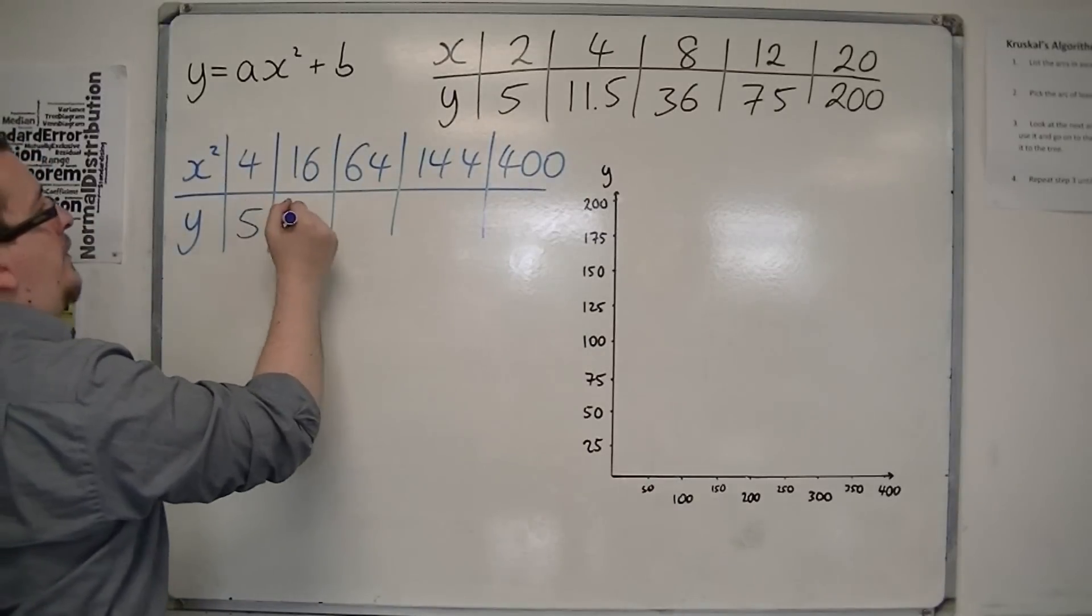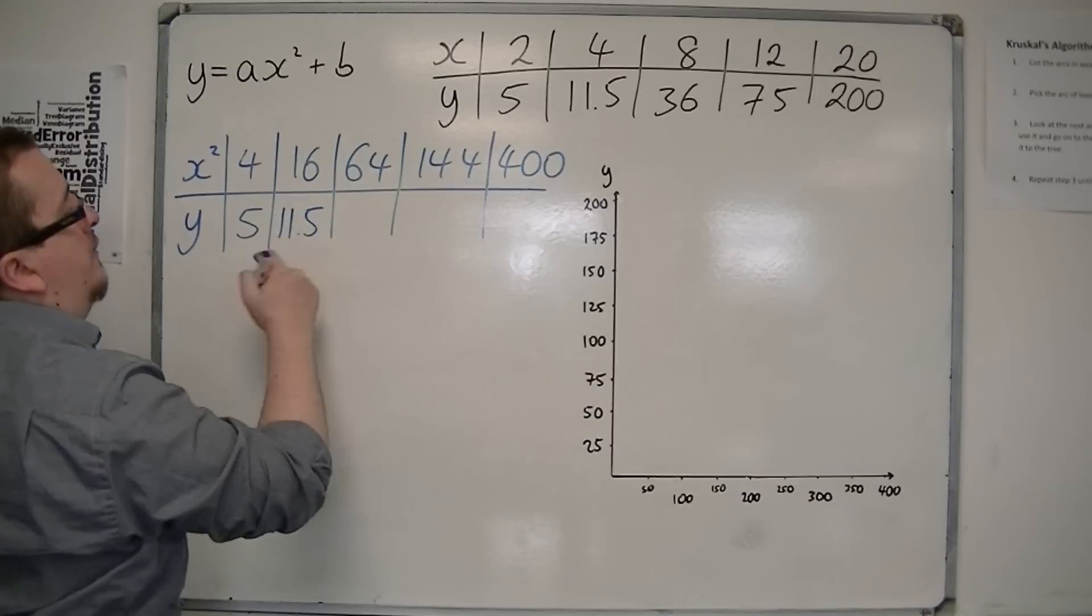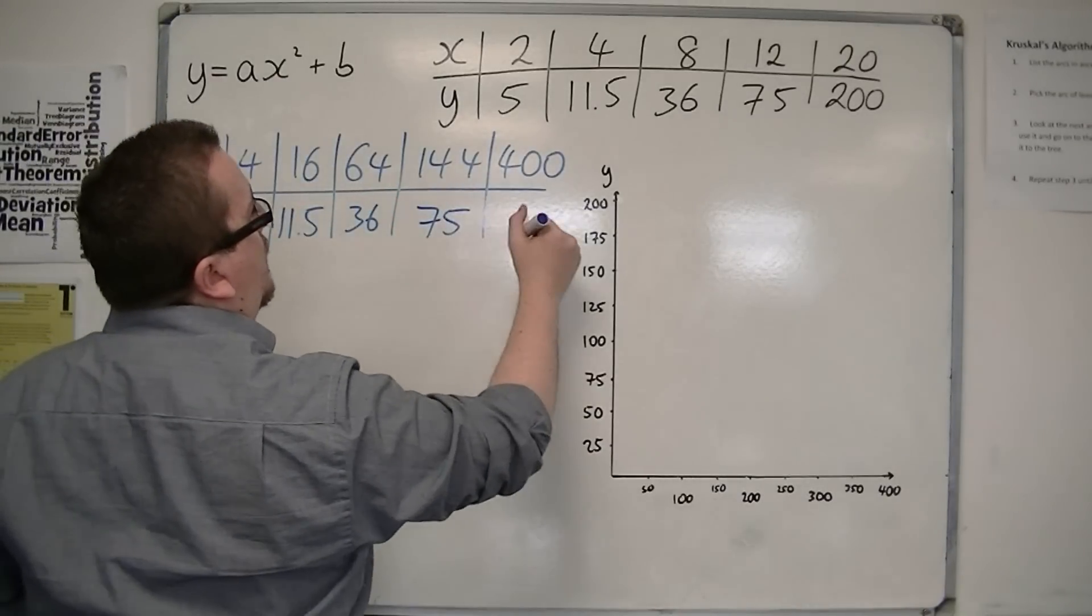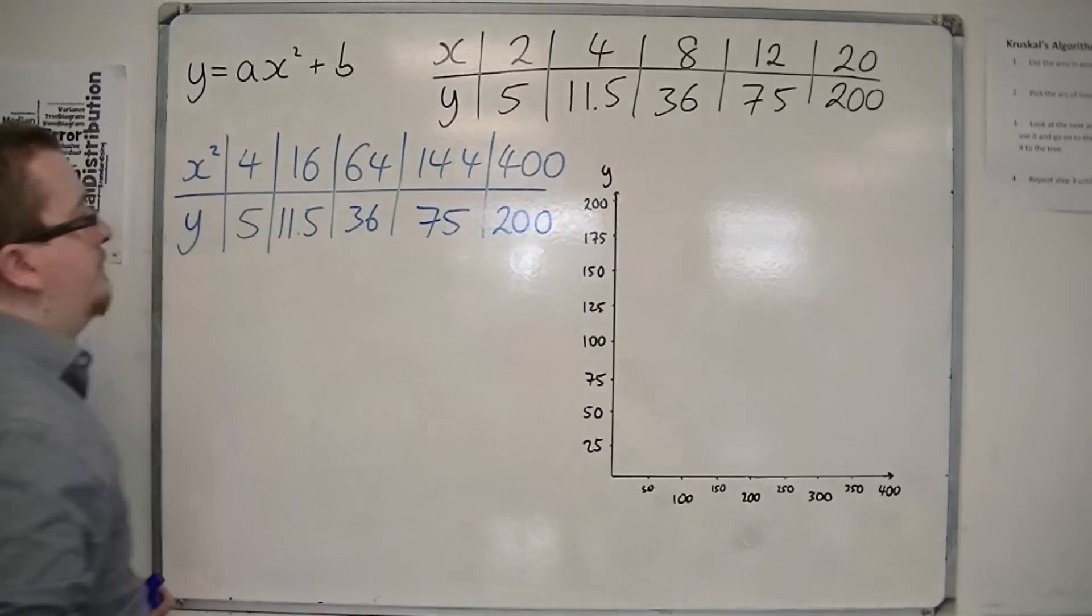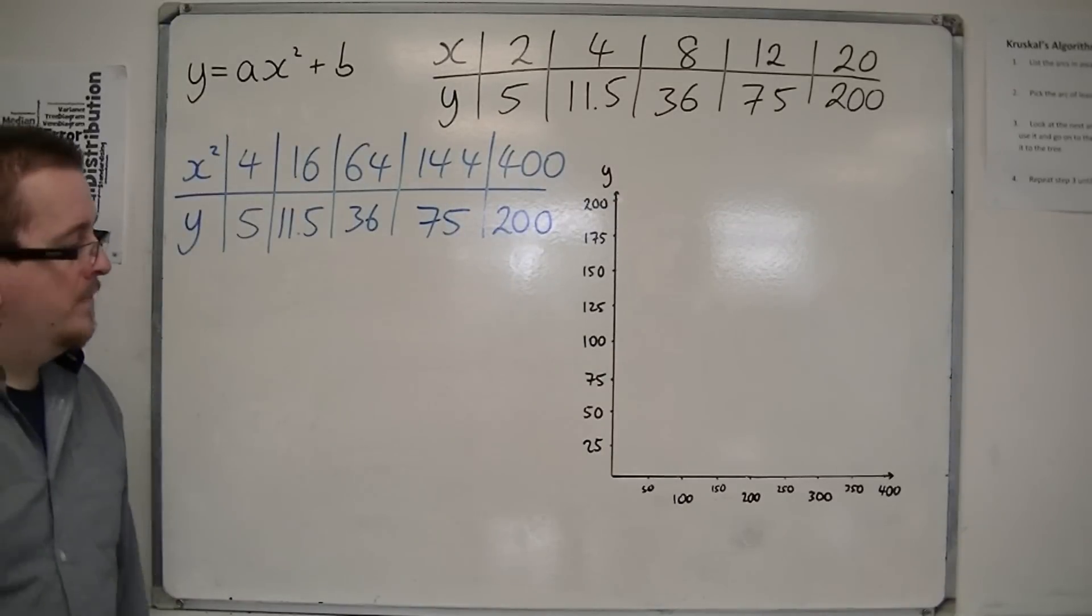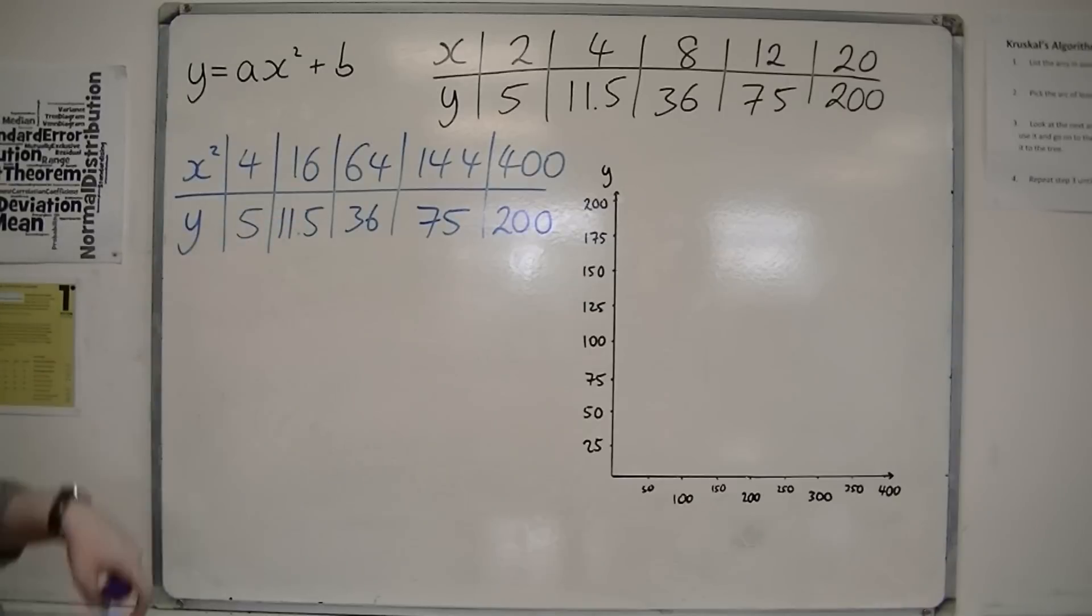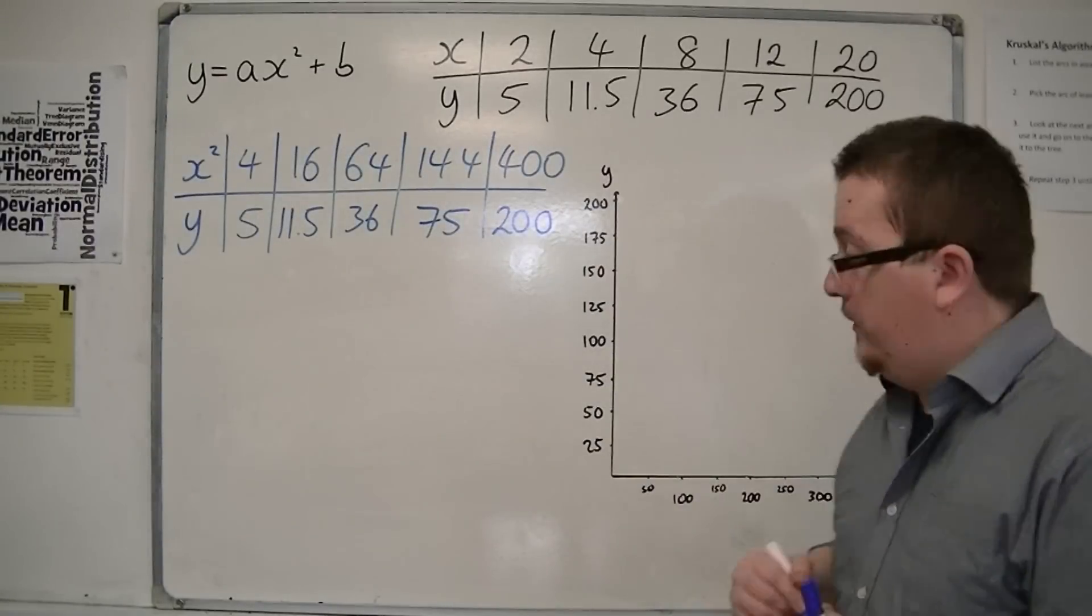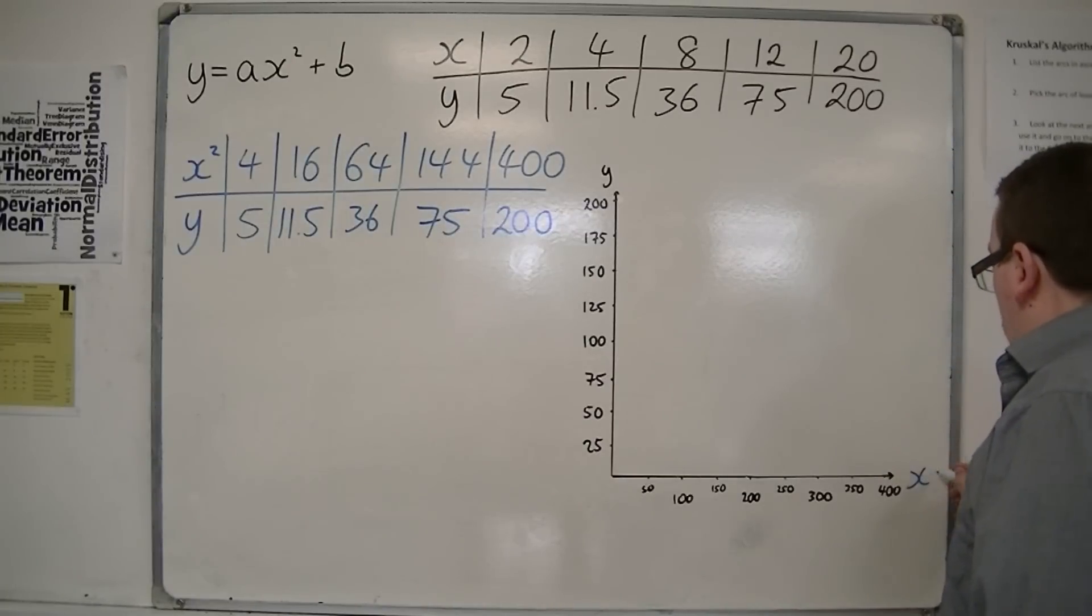And the y values are as they are there: 5, 11.5, 36, 75, and 200. So we plot this data instead onto our graph here. So this is actually y and x squared.